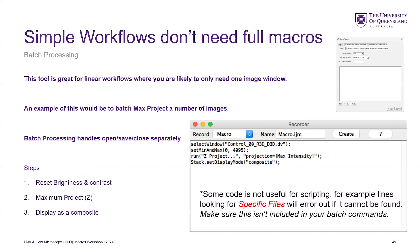Sometimes there is also this tool in Fiji called batch process. Maybe you don't need a full macro — maybe it's as simple as open image, run Z projection, and do that for a whole folder of images. If you open the image, reset the brightness and contrast to max display range 0 to 12-bit, and run projection max displayed as composite — that's not that complicated. You can just use this batch processor. Take these commands and put them in; it handles the folder you're going to look for images in and the folder you want to put them in.